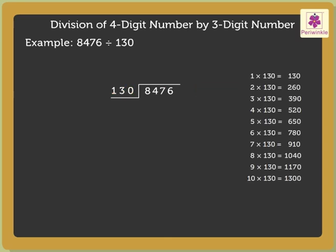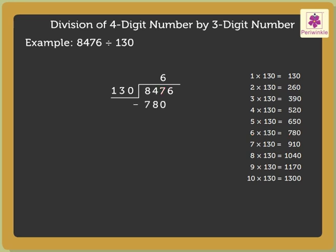Here, we have to find a multiple of 130 which is equal to or less than and nearest to 847. The nearest multiple is 780. As 130 into 6 is equal to 780, we write 6 in the quotient above 7. Now, subtract 780 from 847, which is equal to 67.